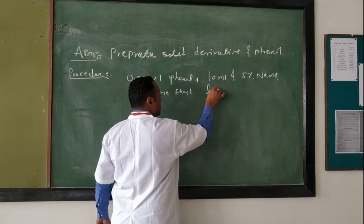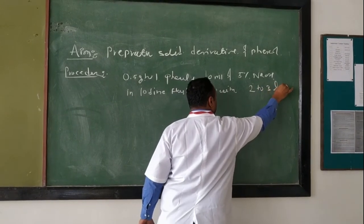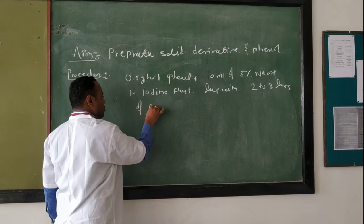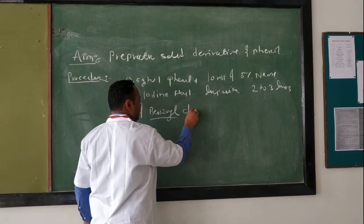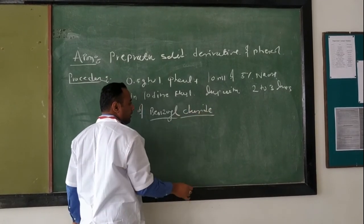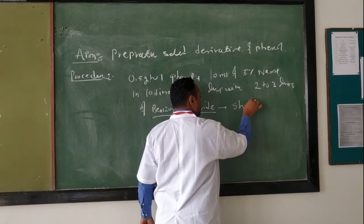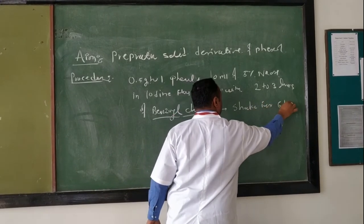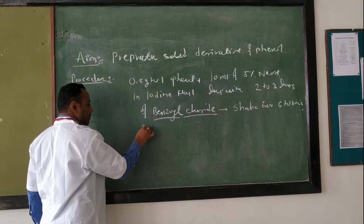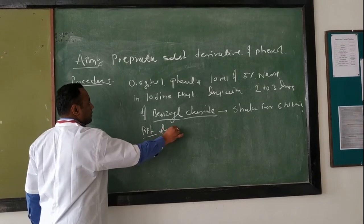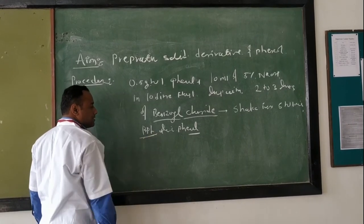Dropwise, you have to add 2 to 3 drops of benzoyl chloride. Make it clear, benzoyl chloride, not benzoyl chloride. It is benzoyl chloride. After adding this benzoyl chloride, shake this flask for 5 to 10 minutes. You get the product or precipitate of derivative of this phenol. Filter this and wash it with water and take out the melting point.